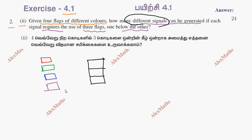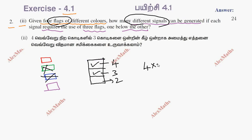We have 4 colors. For the first place there are 4 options. This is without repetition — if one color is used, then for the second place we have 3 options, and for the third place we have 2 options. So the total number of possibilities is 4 × 3 × 2 = 24.